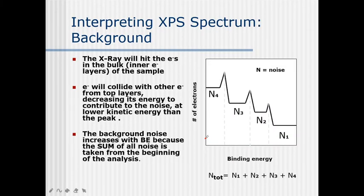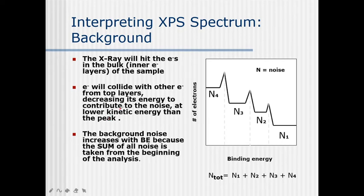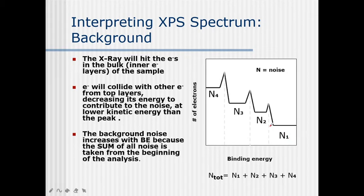How do we interpret the XPS spectrum? X-rays hit the electrons in the bulk — the inner electron layers of the sample. Electrons may collide with other electrons from the top layers, decreasing their energy and contributing to noise at lower kinetic energy than the peak. This decrease in kinetic energy contributes to background noise, which increases with binding energy because the sum of all noise is accumulated from the beginning of the analysis. In totality, including noise N1 + N2 + N3 + N4, we must interpret the full XPS spectrum.